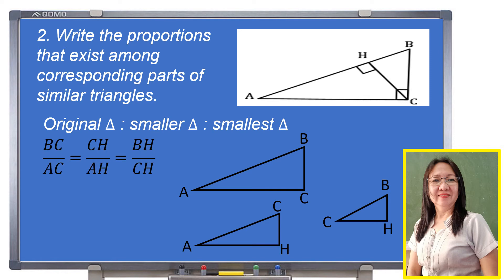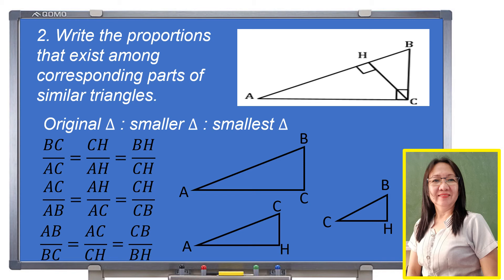Look at the first proportion: BC (the shorter leg) to AC (the longer leg) equals CH to AH, which equals BH to CH. For the second possibility: AC (the longer leg) to AB (the hypotenuse) equals AH to AC, which equals CH to CB.